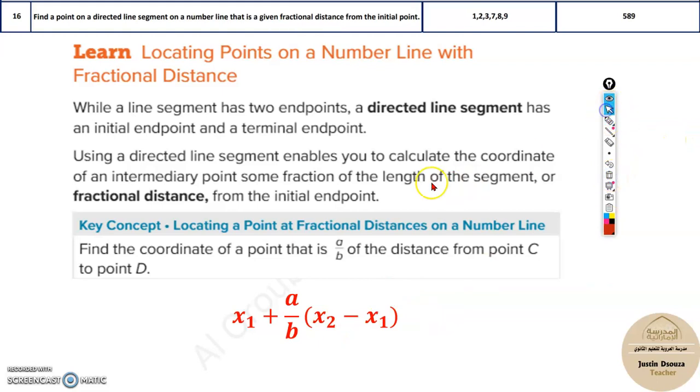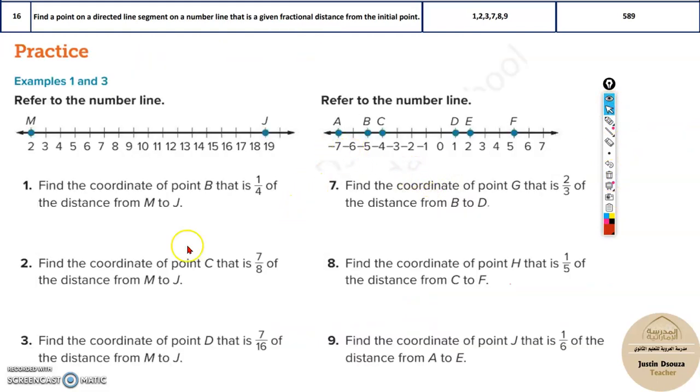Again, let's quickly solve a couple of problems. Now see, over here you've been given the number line. The initial point x1 is 2, and over here that is x2, and the fractional distance I mentioned. So let's do this one - 7 by 16 is given. The fractional distance is given.